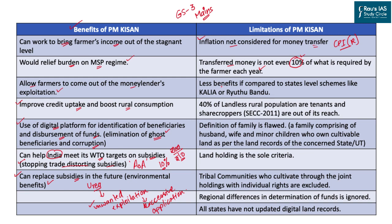Third, state schemes like Kalia and Rythu Bandhu have been more successful and provide more benefits compared to PM Kisan. Under Rythu Bandhu, there is season-wise allocation of funds before every cropping season, making farmers more likely to use the money for agriculture purposes. Rythu Bandhu is also based on anticipated input expenditure — the money received matches what the farmer is going to spend on agriculture — making these state schemes far better than PM Kisan.